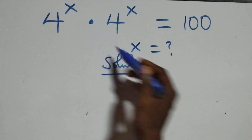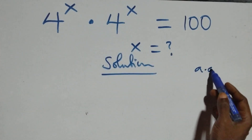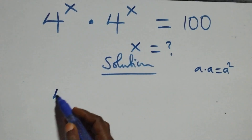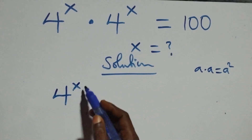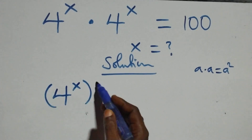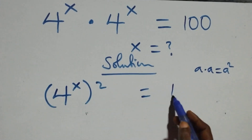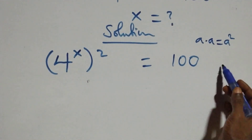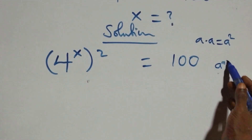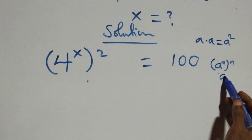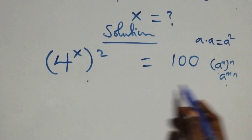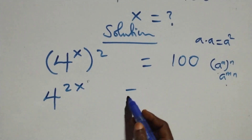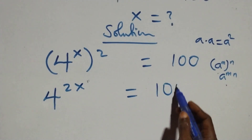From what we have here, this follows when we have a times a, which is the same thing as a squared. Multiplying here, we can have 4 raised to power x squared equals 100. Then this power multiplies when we have a raised to power n times a raised to power n, which is the same as a raised to power 2n. So here we have 4 raised to power 2x equals 100.